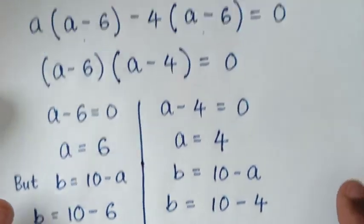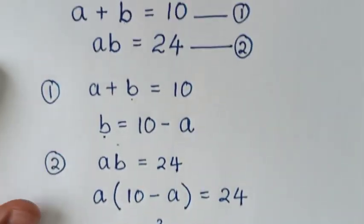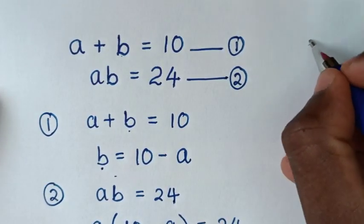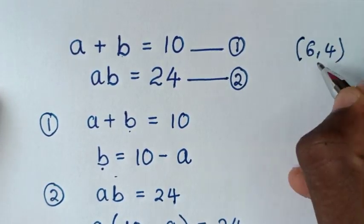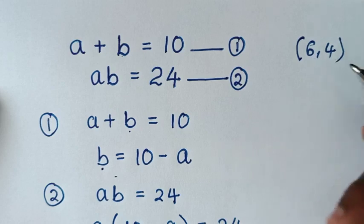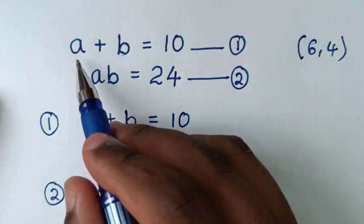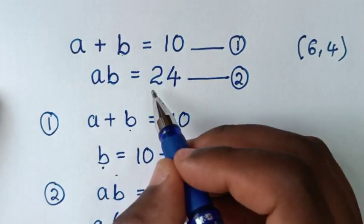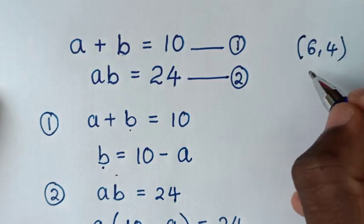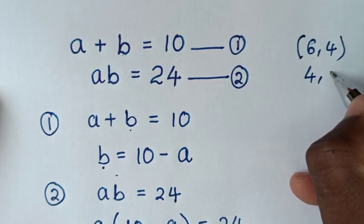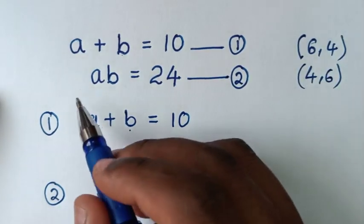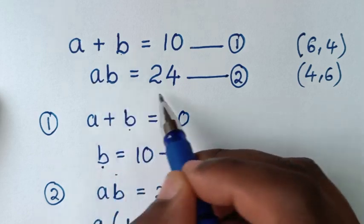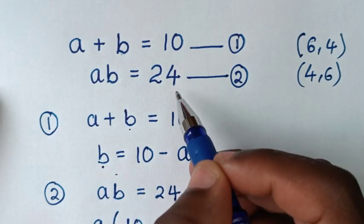Now, let's verify. When a equals 6 and b equals 4: 6 plus 4 equals 10, and 6 times 4 equals 24. When a equals 4 and b equals 6: 4 plus 6 equals 10, and 4 times 6 equals 24. Both solutions check out.